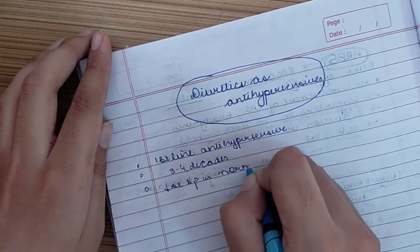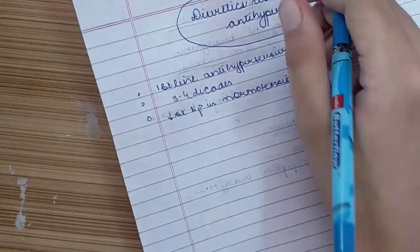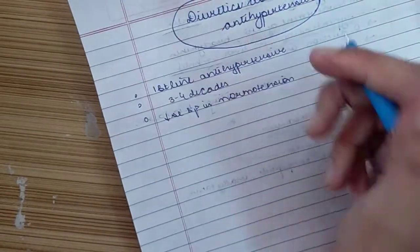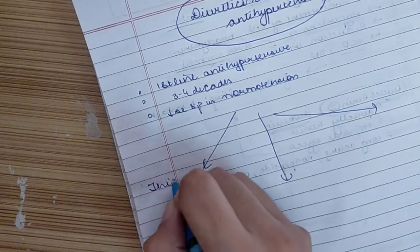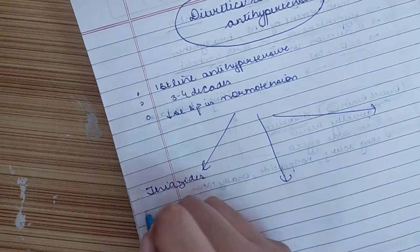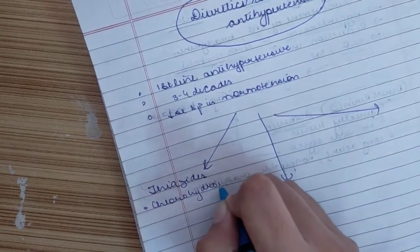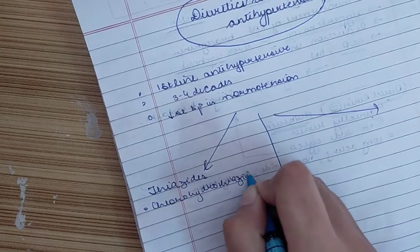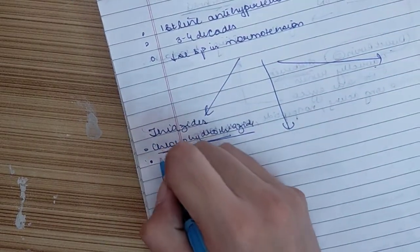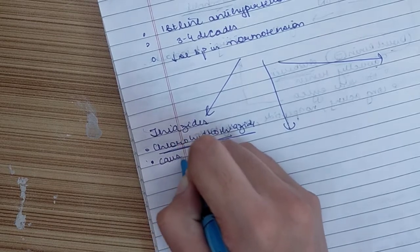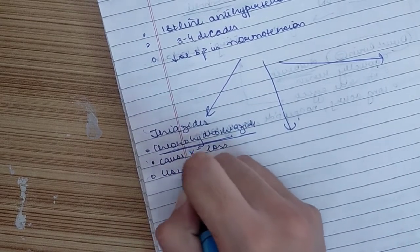In our diuretics, what do we have? We have thiazides. In thiazides we have chlorothiazide and hydrochlorothiazide. What happens is these thiazides cause potassium loss. They are used in cases where hypertension is uncomplicated.